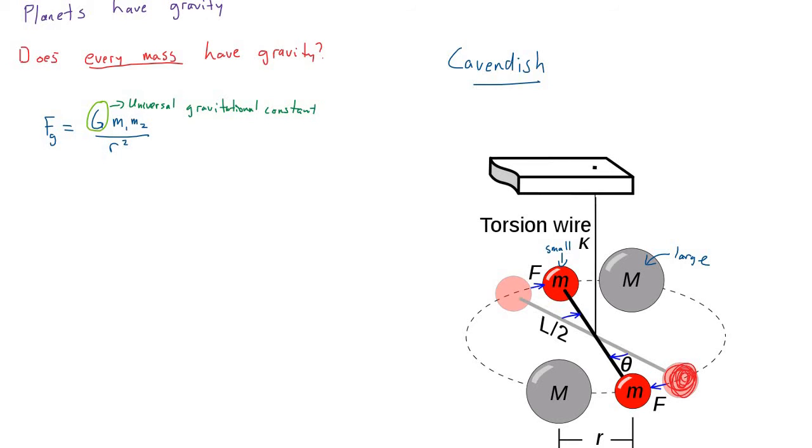But the interesting thing is, when you introduce the gray masses onto the scene, then those red masses slightly begin to rotate toward the large gray masses. And that's the blue arrows that you see in the diagram. That's the motion that happens when the gray masses are introduced onto this setup.